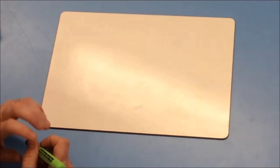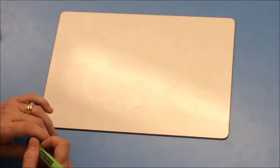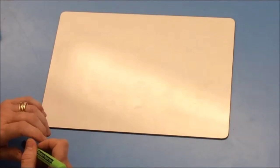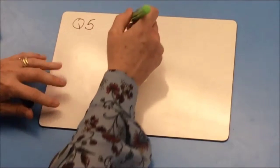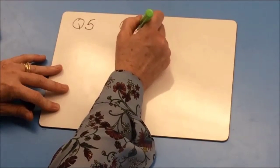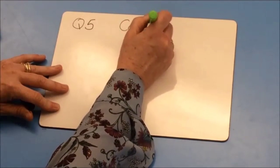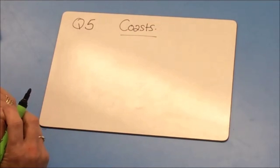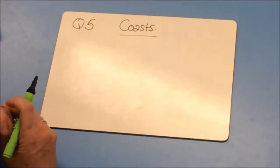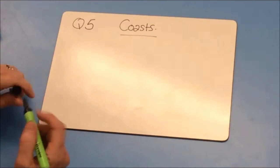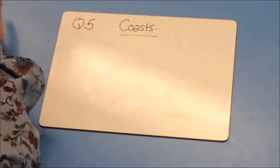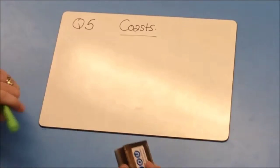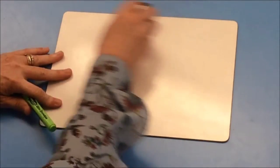We are moving on and looking at section B. In section B you have to choose one of two questions, and you're going to answer question five, which is the question about coasts. In this topic you should be thinking about coastal erosion, coastal deposition, stacks and arches, spits, and how we can protect the coasts.